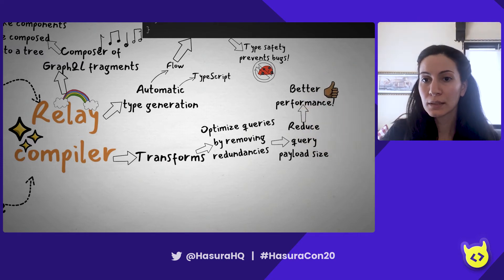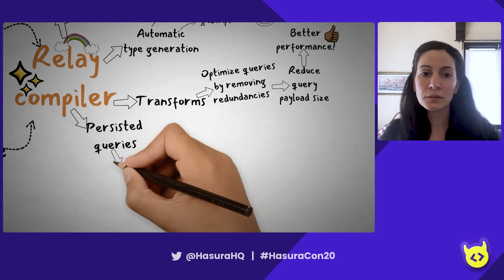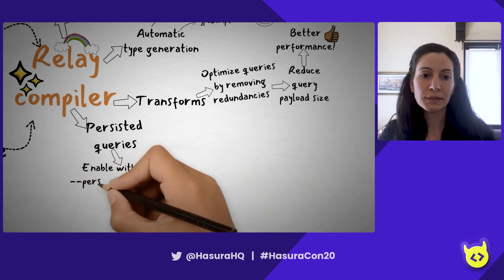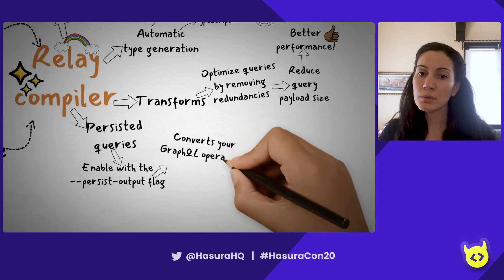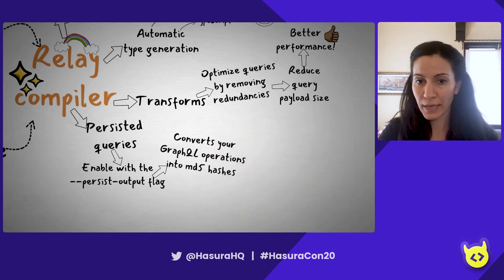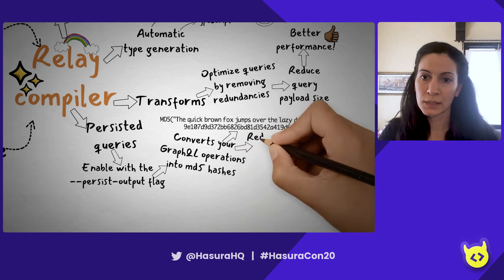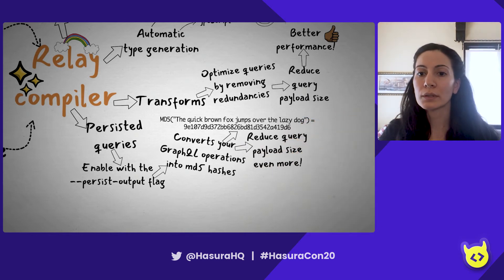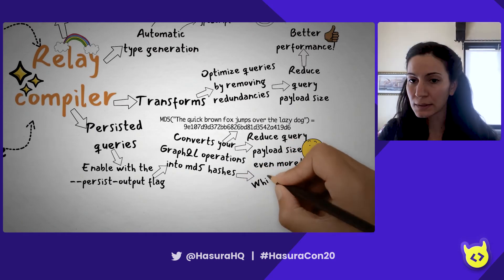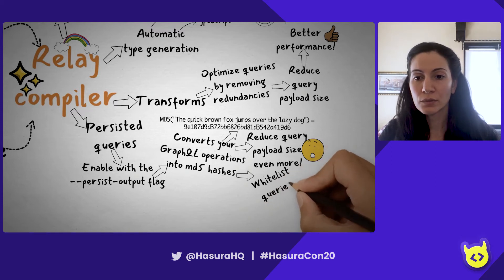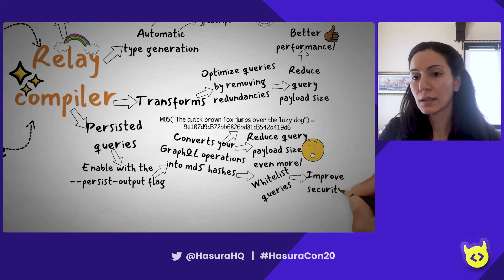Speaking of shorter strings, you can also enable persisted queries. When you run the Relay compiler, you can use the persist output flag. When this is enabled, your GraphQL operations will be converted into MD5 hashes. MD5 hashes make our strings shorter, which reduces query payload size even more. And not only that, but you can now whitelist queries because these MD5 hashes can define queries that your clients are restricted to use. So this improves security.